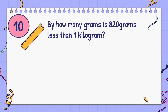By how many grams is 820 grams less than 1 kilogram? Answer: 180 grams.